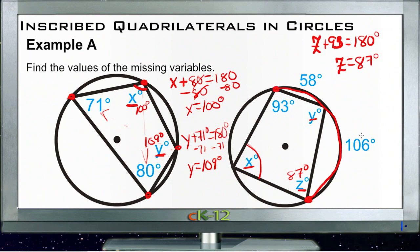And x intersects here and here, so its intercepted arc is 58 plus 106, or 164 degrees. So these two together, here and here, are 164. So that means that x is half of that, or 82 degrees.